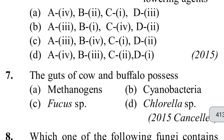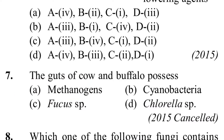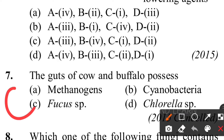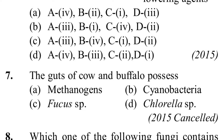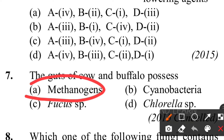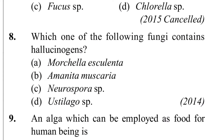Seventh question: the gut of cow and buffalo possesses which type of bacteria? Very easy - option A, methanogens. Because they eat plant leaves containing cellulose. To digest cellulose, the enzyme cellulase is needed, and the organisms producing that are methanogens. This is why we can obtain natural gas from cow dung.